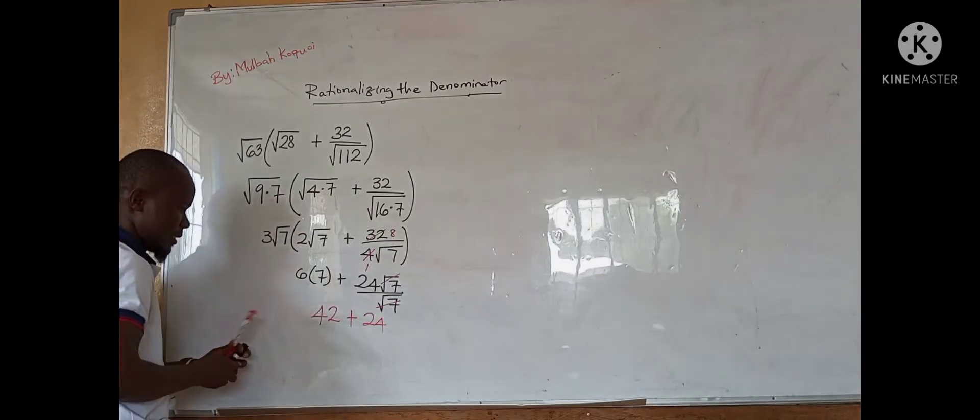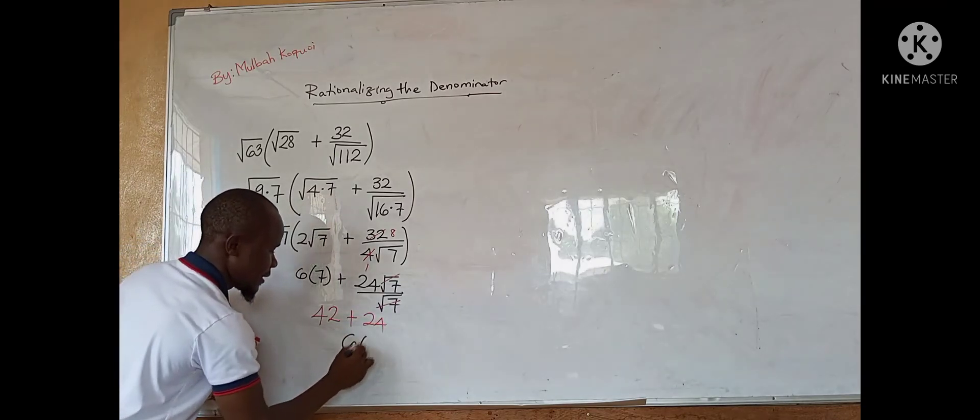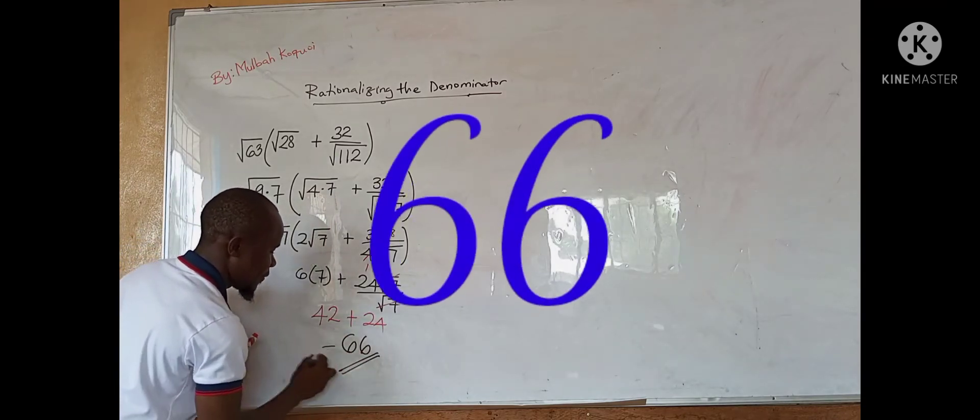So now our final answer would be 42 plus 24, which is 66. So this is our final answer.